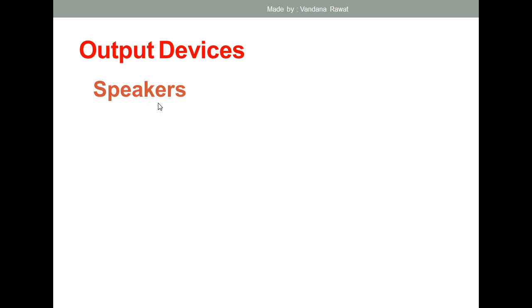Let us start with speakers. A speaker is one of the most commonly used output devices. It is an output device because when a sound is recorded using software, it is stored in digital form, and to listen to that digital audio file you need a speaker. So the speaker is one kind of output device.